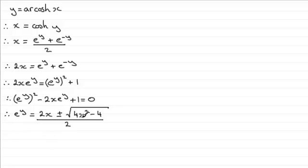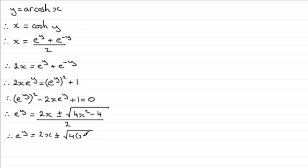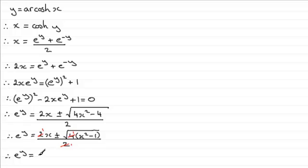What I can do is factorise the expression inside the square root. So we have e to the y equals 2x plus or minus the square root of 4 times (x squared minus 1), all divided by 2. The 2's cancel because the square root of 4 is 2, so we can take those 2's out. What we're left with is e to the y equals x plus or minus the root of x squared minus 1.